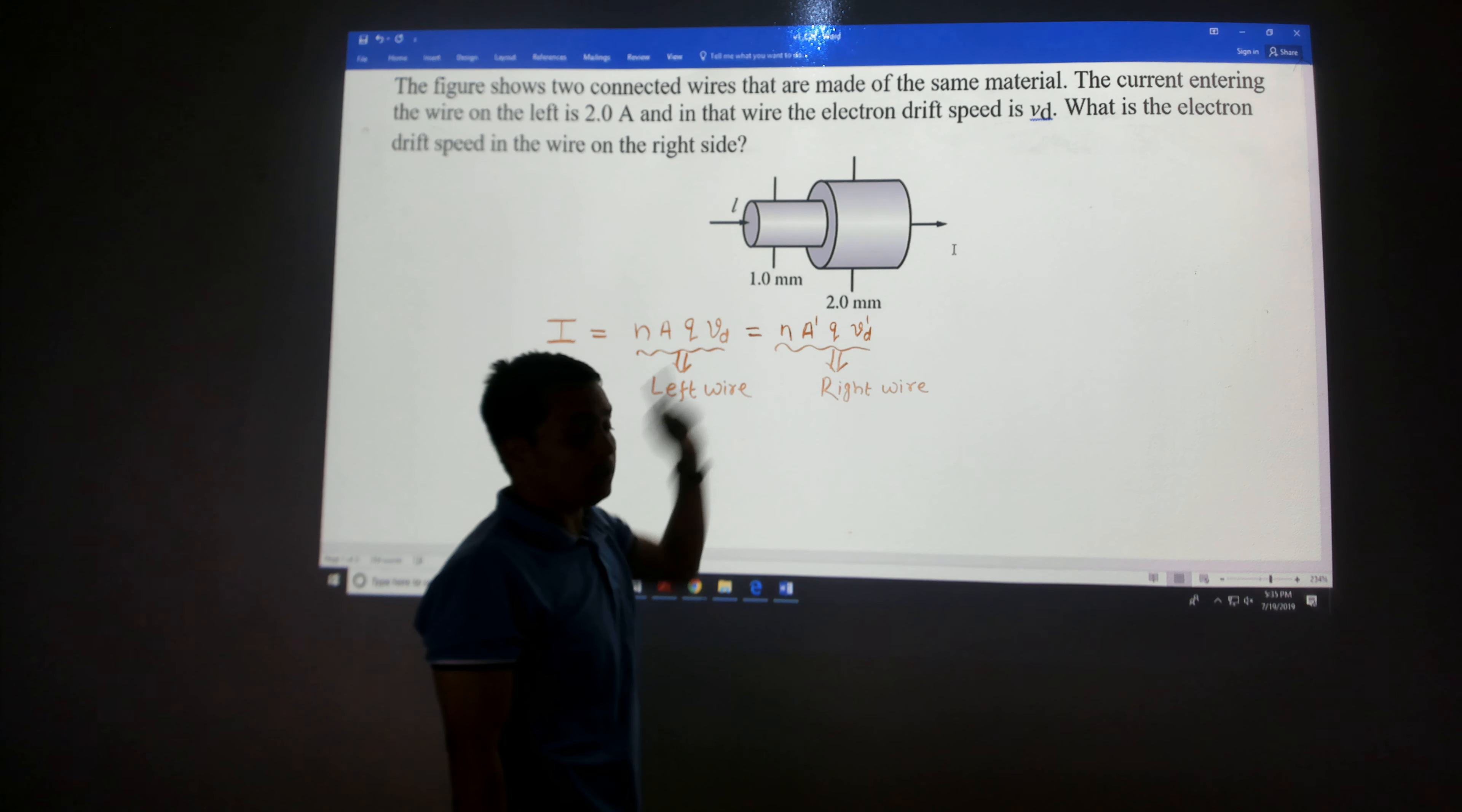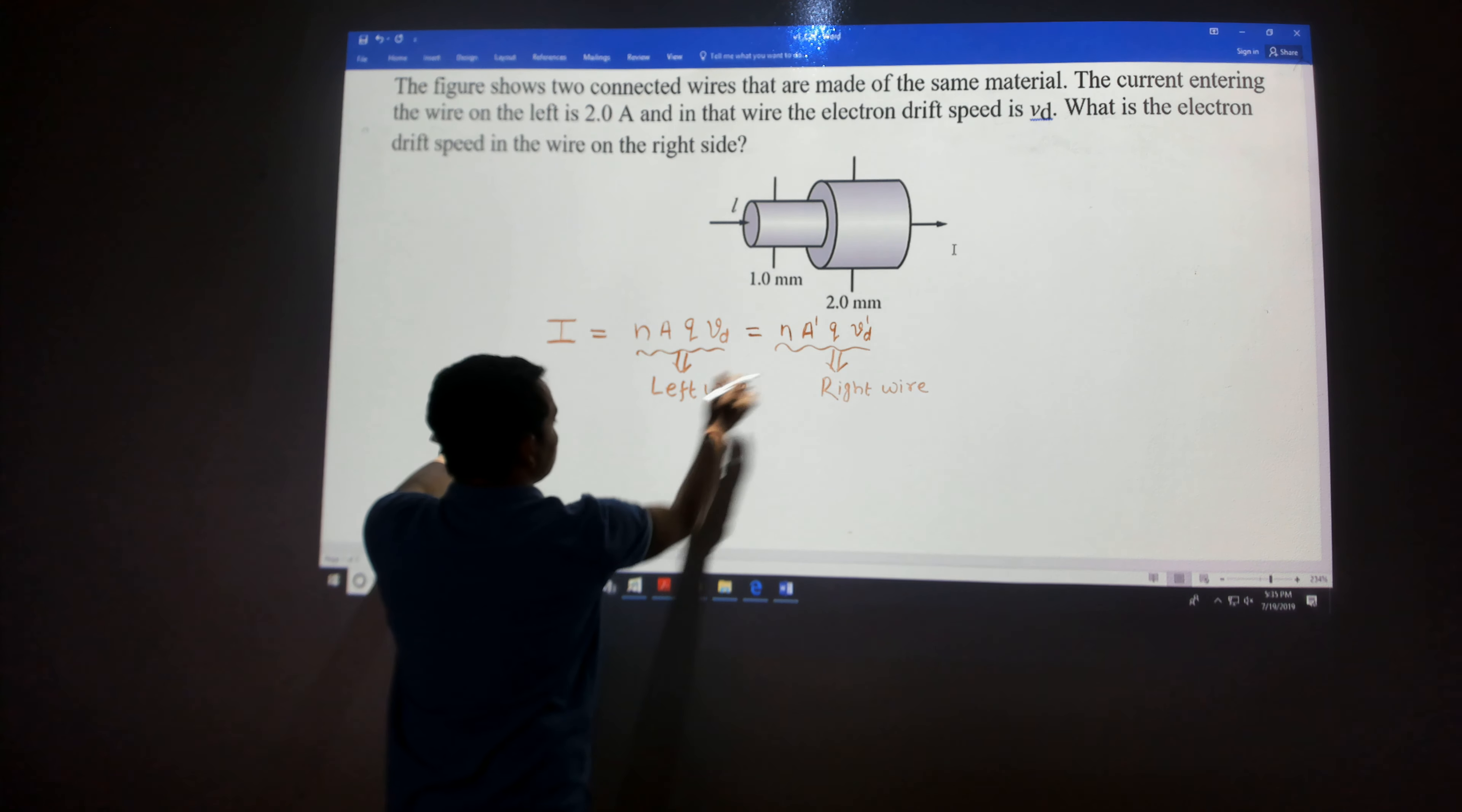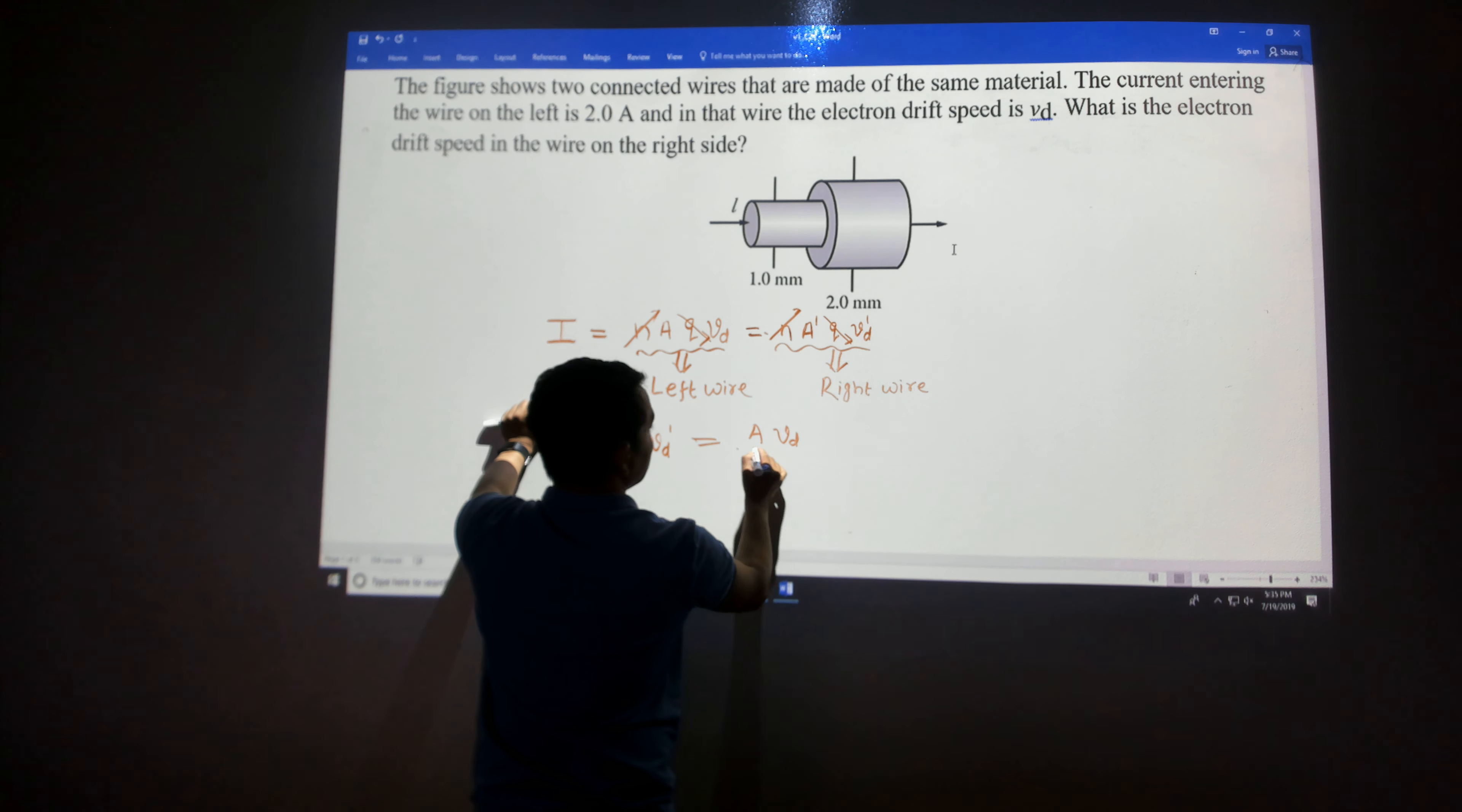The drift velocity could be different, so now let's solve this. I'm using these two equations. VD prime, which is the drift velocity in this material—N cancels out, Q cancels out—simply equals A over A prime times VD.